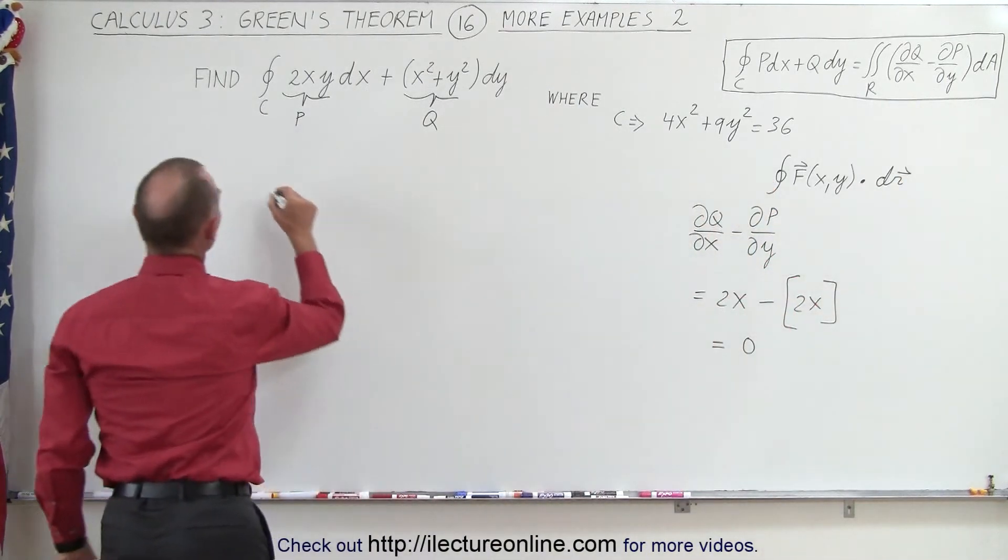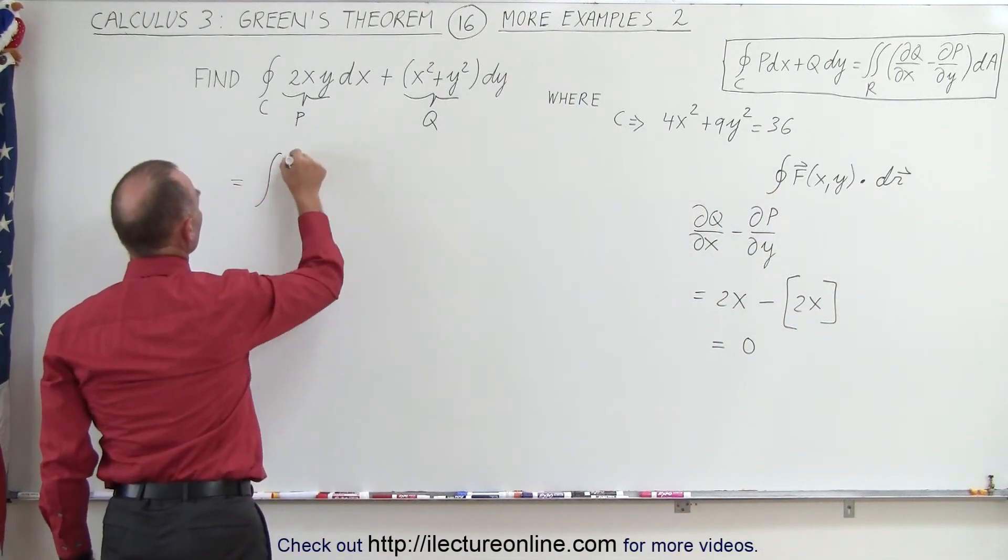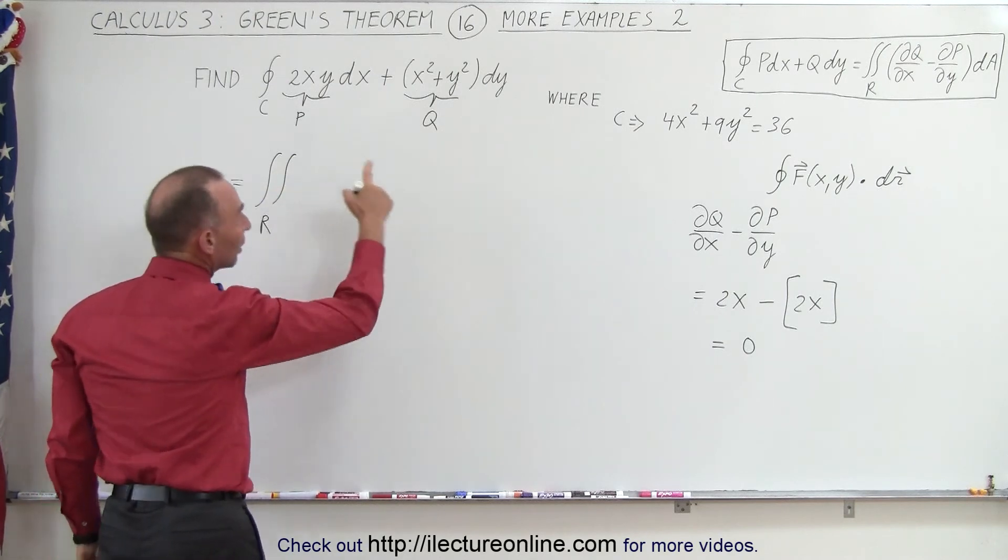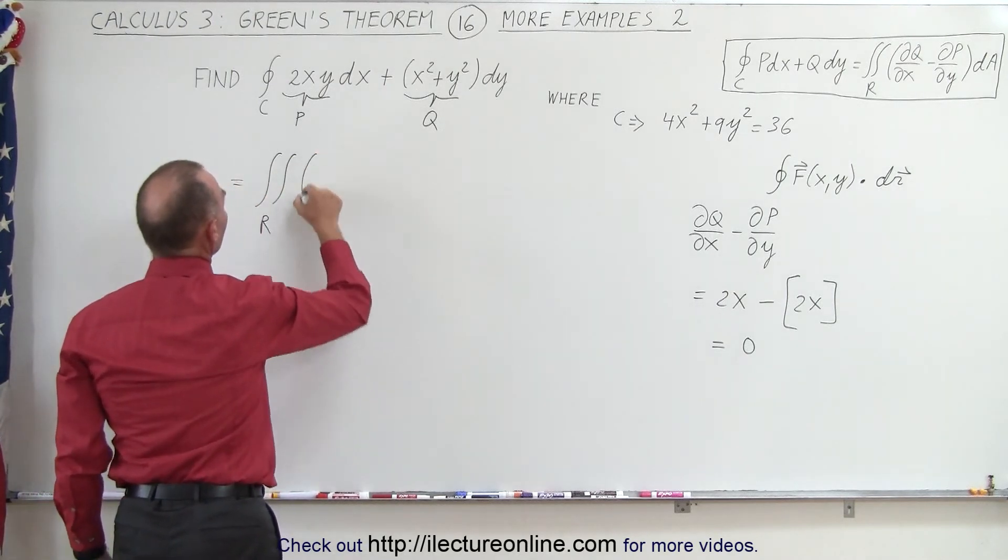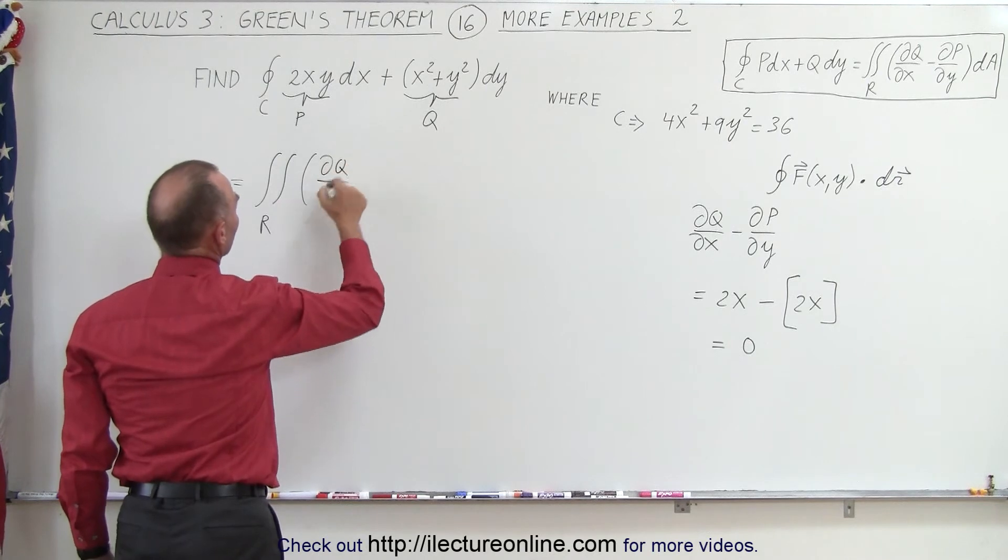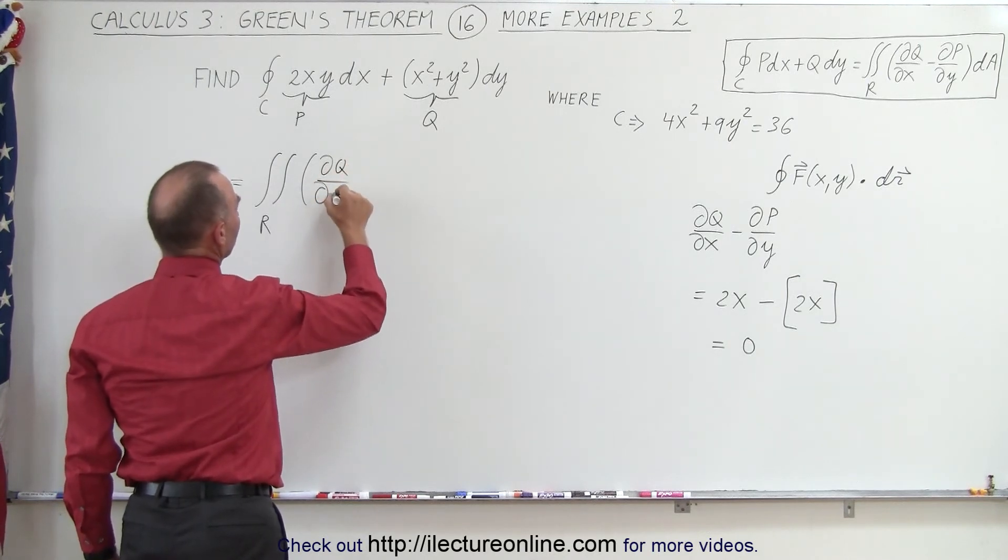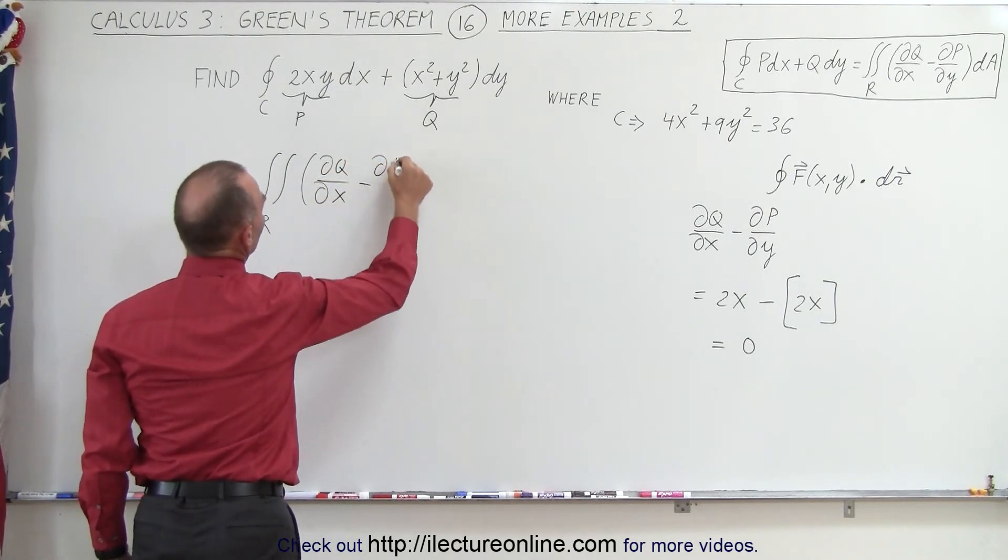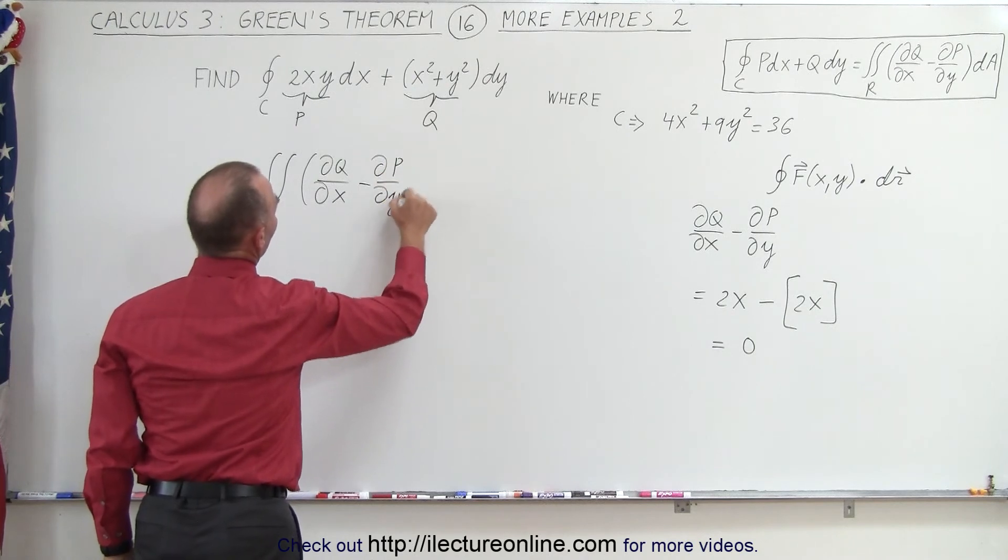So this can be equal to the double integral over the region enclosed by the path of the partial derivative of Q with respect to X minus the partial derivative of P with respect to Y times the area but as we discovered that integrand is equal to 0.